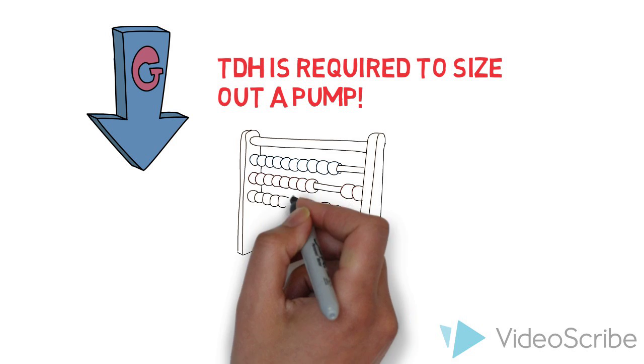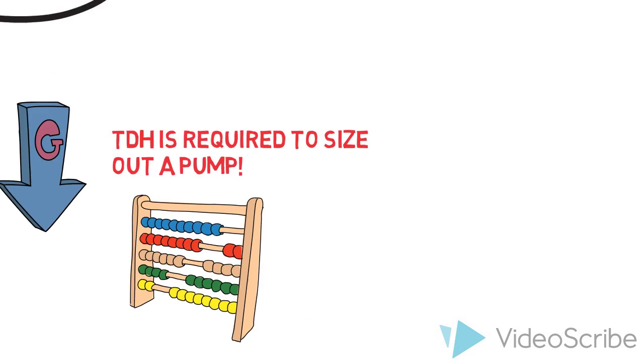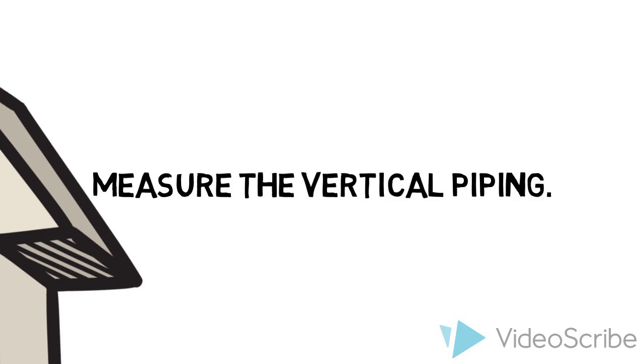To calculate TDH, we need to know two variables. First, the vertical rise, which measures the vertical piping in feet.